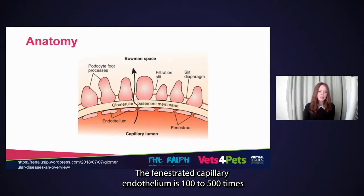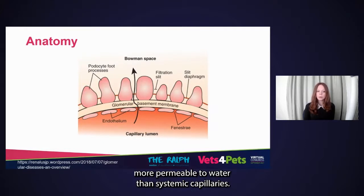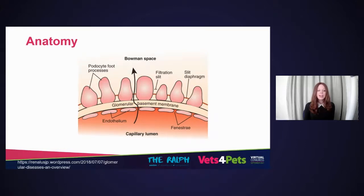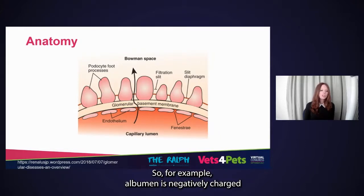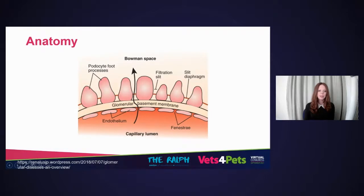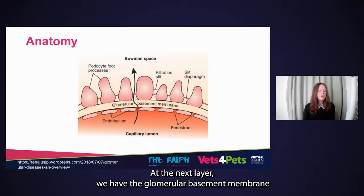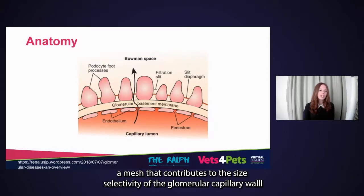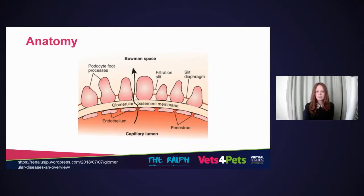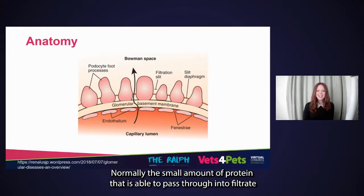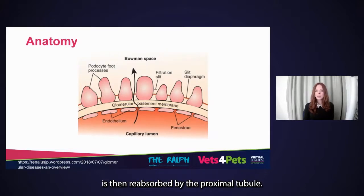The fenestrated capillary endothelium is 100 to 500 times more permeable to water than systemic capillaries. The negatively charged surface contributes to the selectivity of which molecules are filtered. For example, albumin is negatively charged and therefore largely excluded from the filtrate. At the next layer, we have the glomerular basement membrane where type 4 collagen forms a mesh that contributes to size selectivity, with only a small amount of substances larger than 60 to 70,000 daltons managing to pass into the filtrate. Normally, the small amount of protein that is able to pass through into the filtrate is then reabsorbed by the proximal tubule.